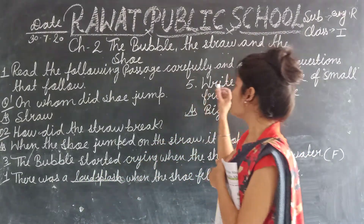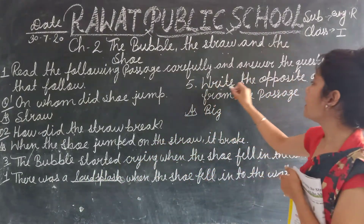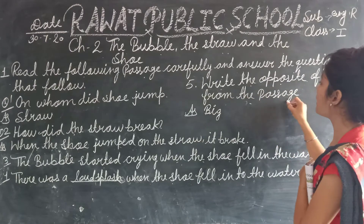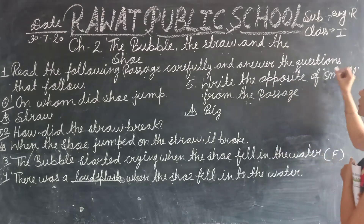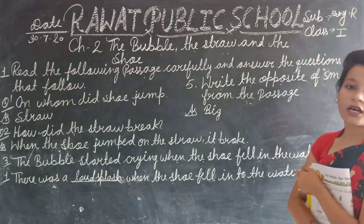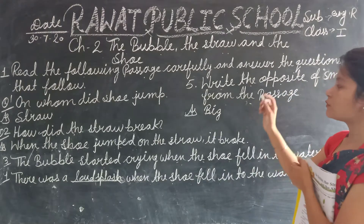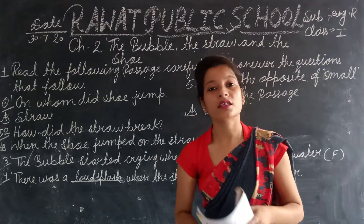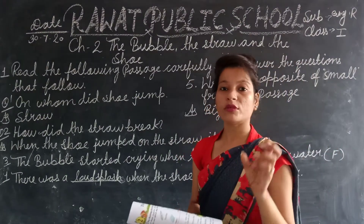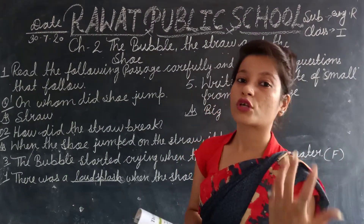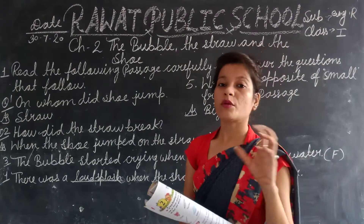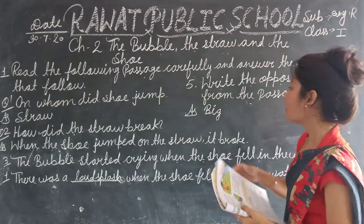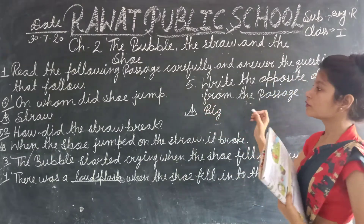Fifth exercise: write the opposite of the words from the passage. Small — the opposite is big.